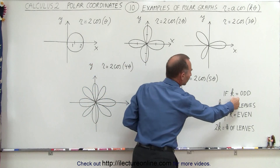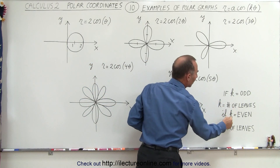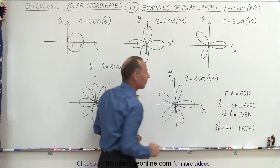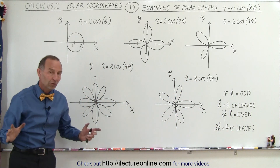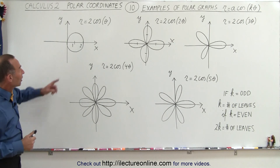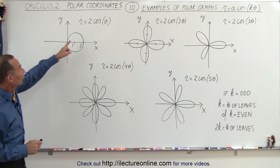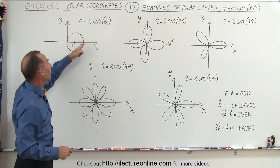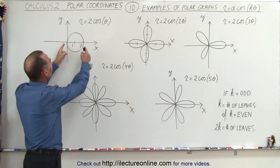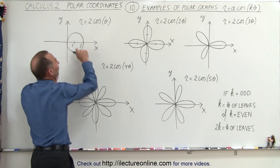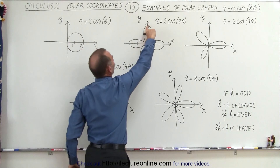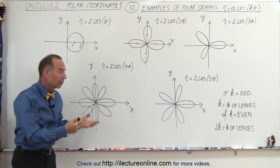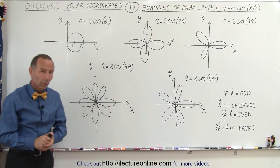In general, if k is odd, k equals the number of leaves. If k is even, the number of leaves equals twice the number k. So those are the subtle differences. The constant in front just indicates the length of each leaf. So the length of each leaf is equal to 2, because we have a 2 in front — and that's true for every one of them.